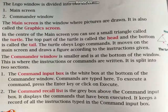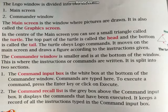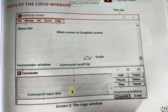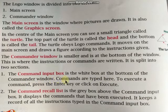The commander window is split into two sections: the command input box and the command recall list. The command input box is the white box at the bottom of the commander window — this is where commands are typed.